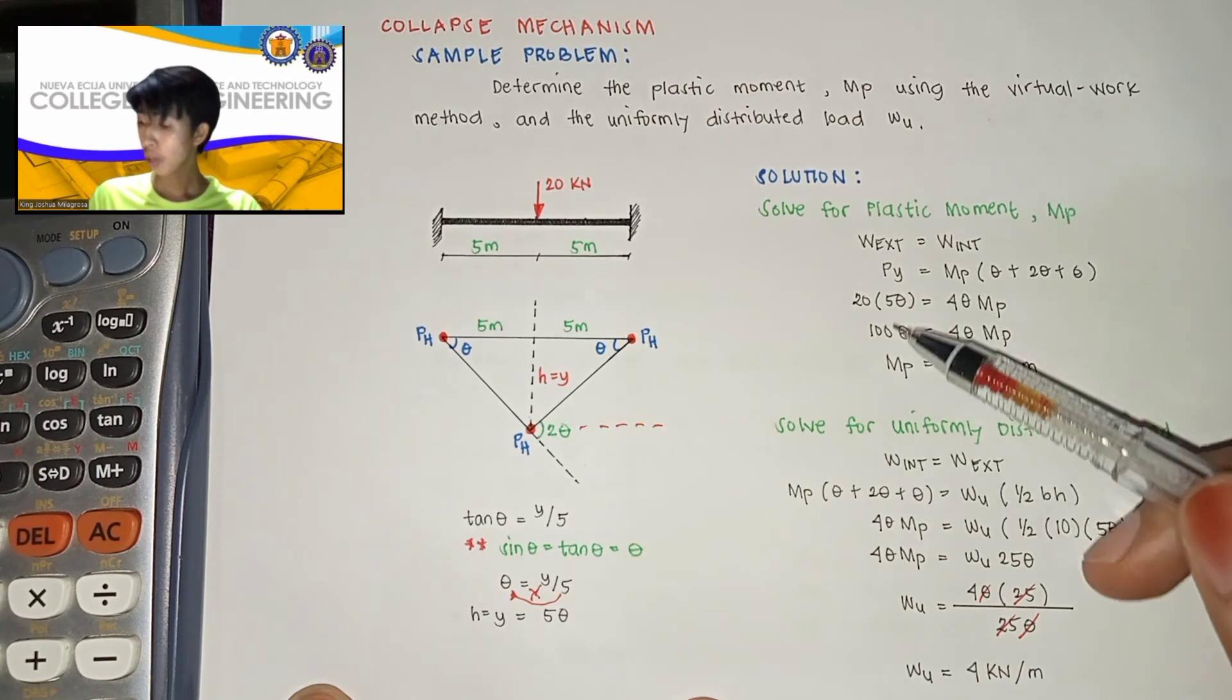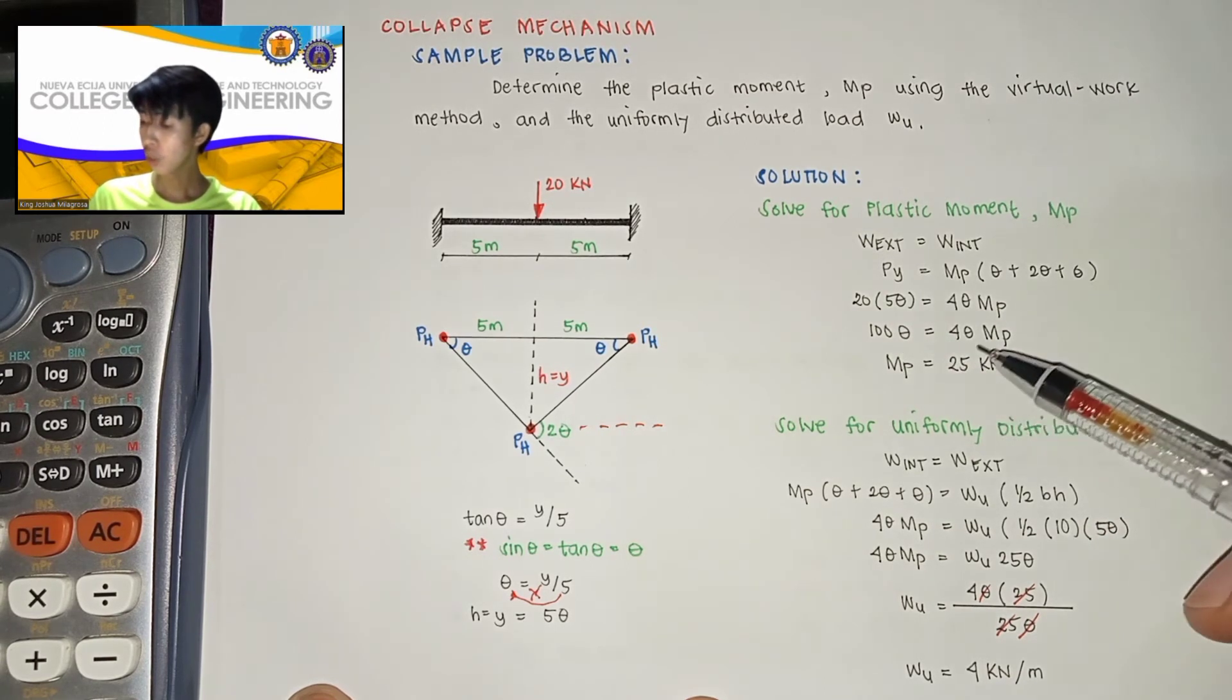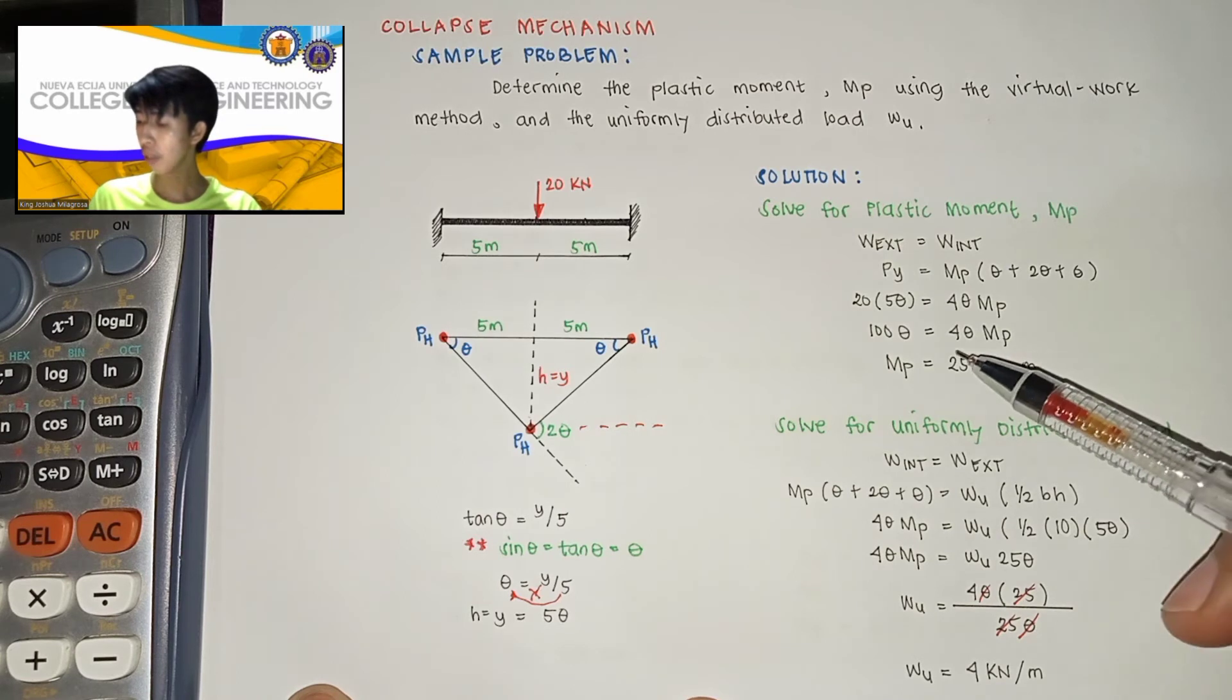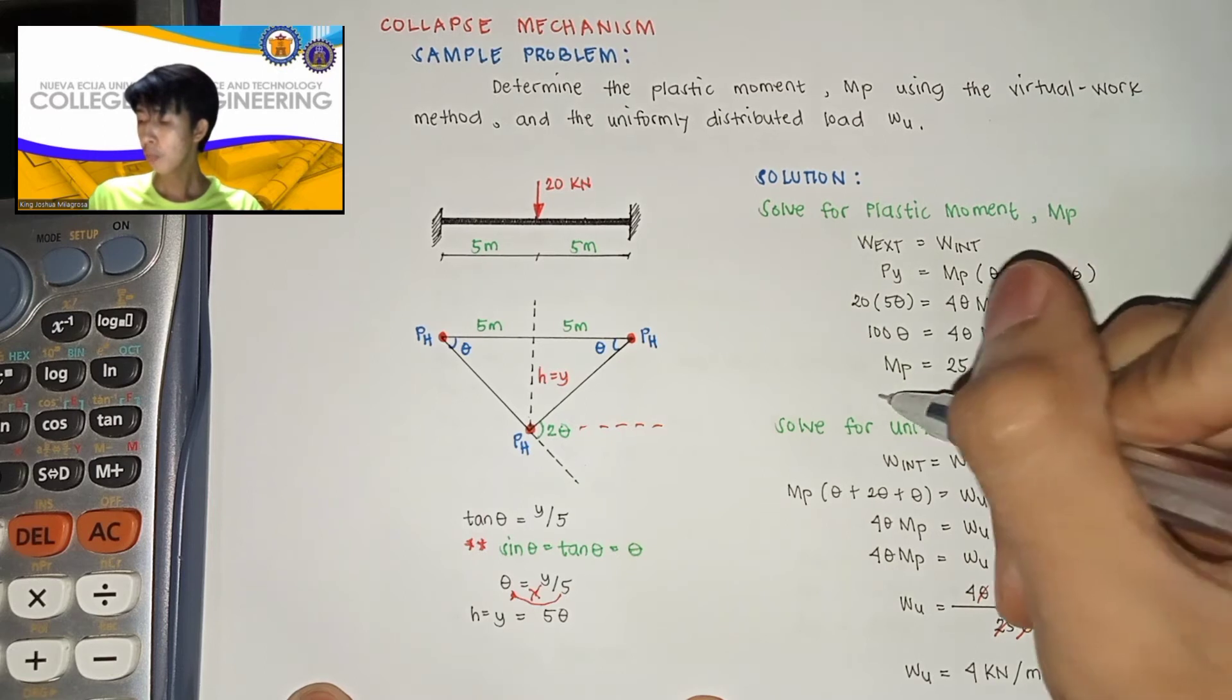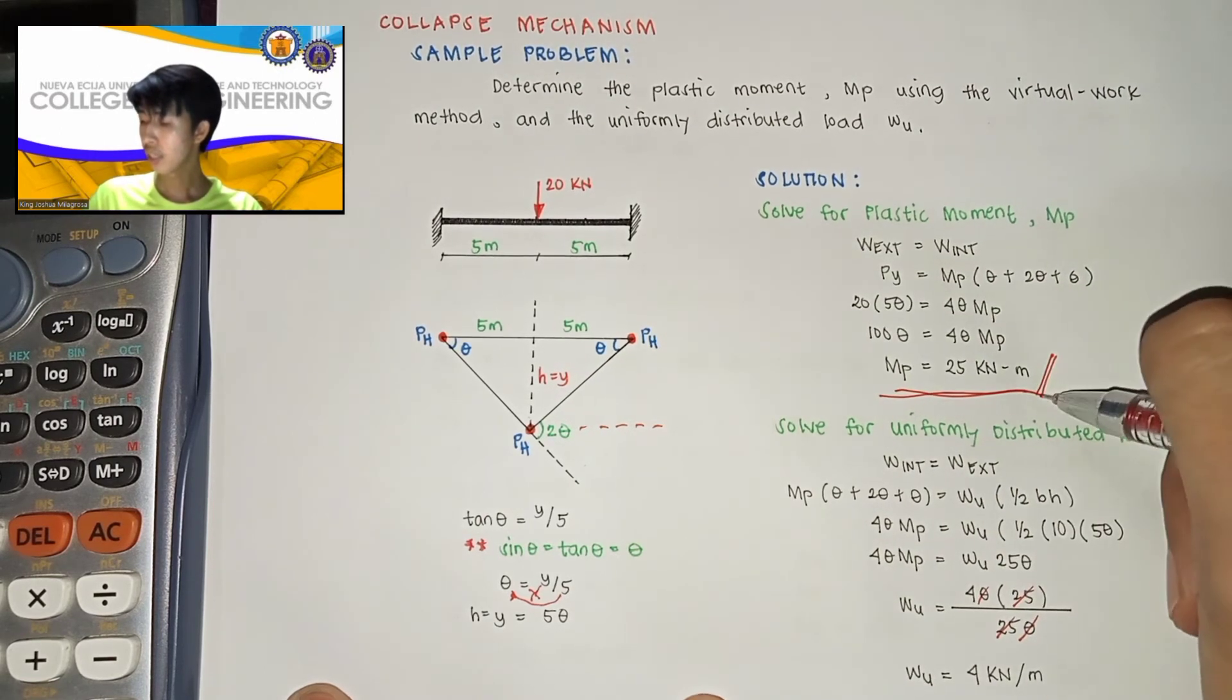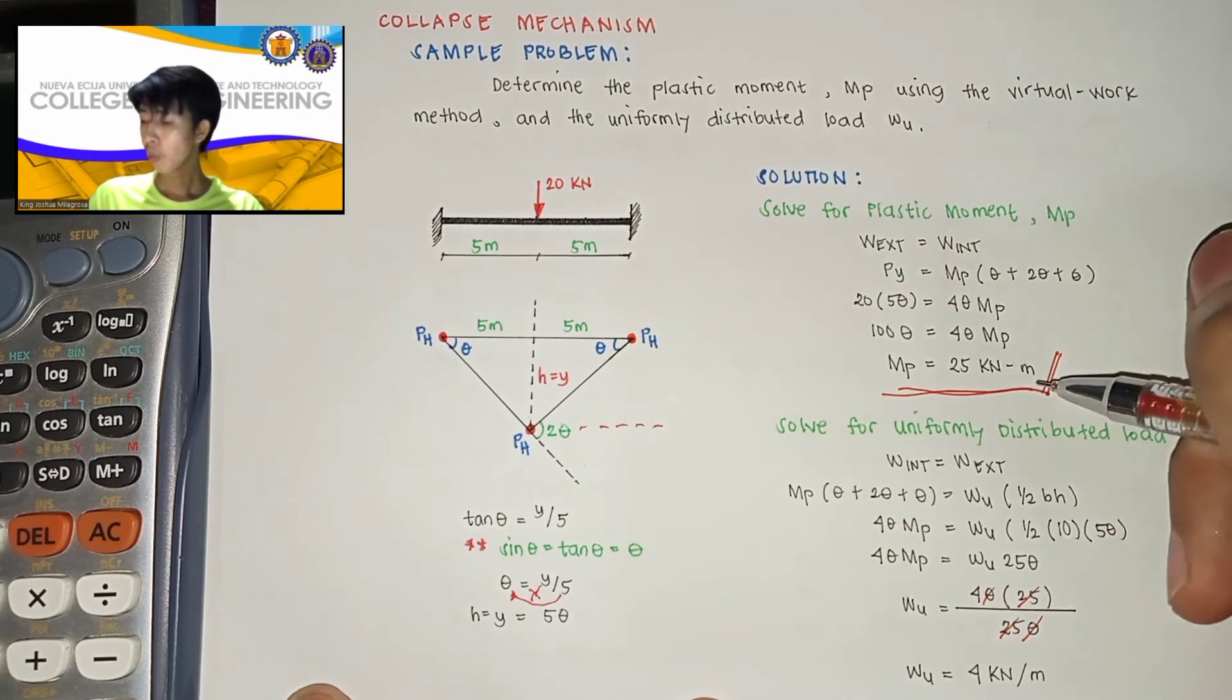So 20 times 5 is equal to 100 theta is equal to 4 theta MP. Then divide both side by 4 theta, then makukunha natin MP or plastic moment is equal yan sa 25 kN-m.